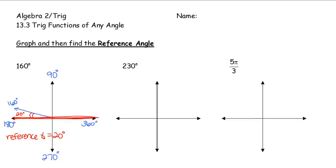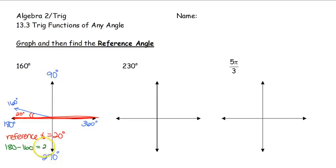If it's not that obvious, or you don't see that, just take the axis that's closest, subtract the angle that you have, and you see that you end up with that 20 degree angle measure.